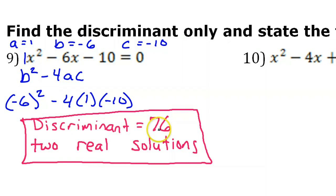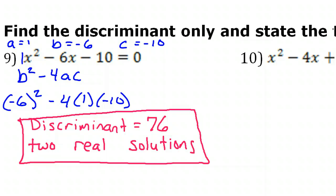If it had been zero, it would be one real solution. If it were negative, it would be two imaginary solutions.